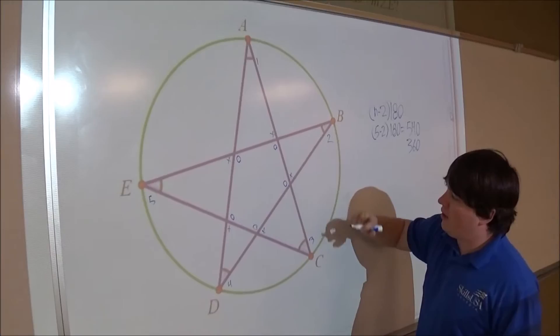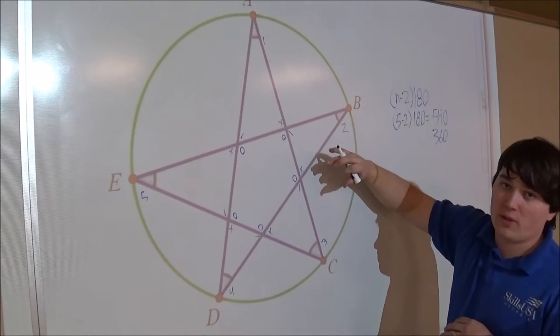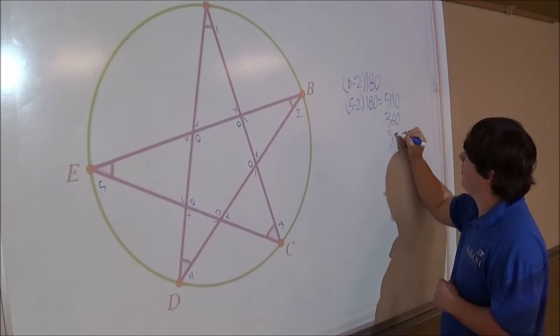You also have these five and they are vertical angles and they're also exterior angles of the pentagon. Those equal 360 as well.